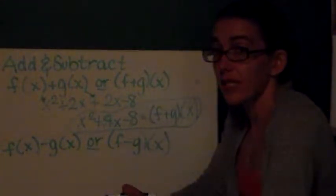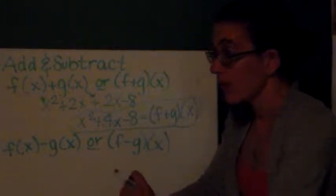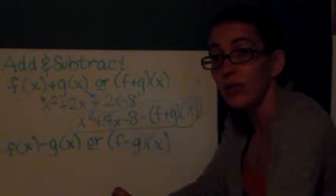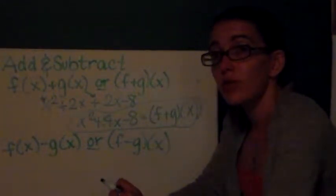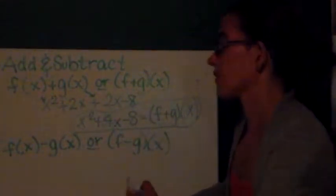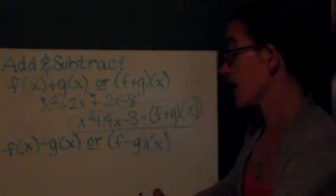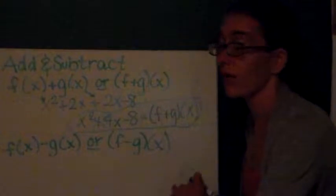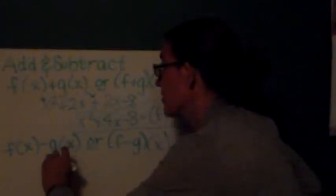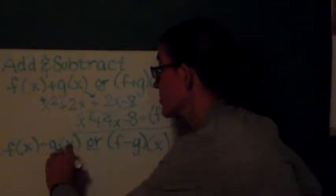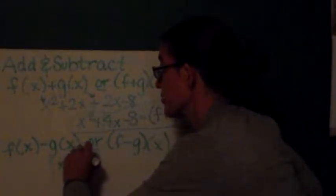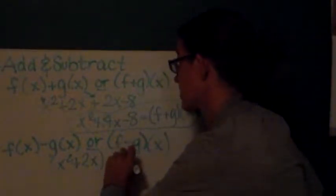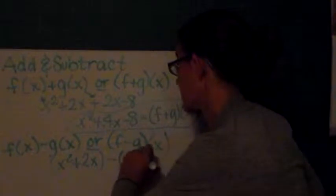Subtraction is similarly easy, but you do have to be careful. Why do you have to be careful? Because if you're working with polynomial functions or anything that has multiple terms in it, you want to remember to subtract everything in your second function. So, here I have f(x) - g(x), which again can also be written as (f-g)(x). So, I'll write out my two functions, and I want to put them in parentheses this time. I have (x² + 2x) - (2x - 8).